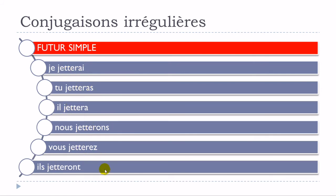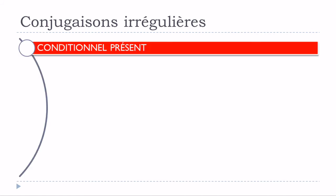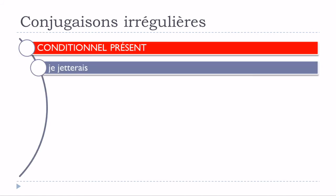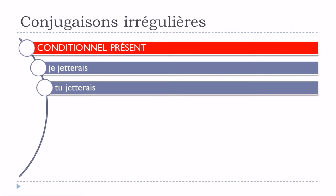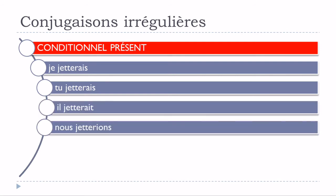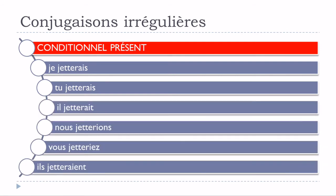And then for the conditionnel présent form: je jetterais, tu jetterais, il jetterait, nous jetterions, vous jetteriez, ils jetteraient. Exactly the same modification, and it will affect all persons, as for the future — you double the T here.